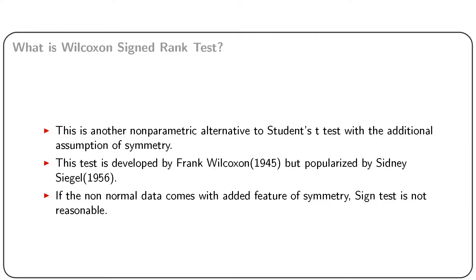This test was developed by Frank Wilcoxon in late 1945 but popularized by Sidney CJ. As is evident from the name, it uses sign and rank of the data together. In fact, it assumes symmetry apart from continuity of the underlying population to provide a distribution-free procedure. We have already seen that data can be non-normal in practice. If non-normal data comes with the added feature of symmetry, sign test is no longer sensible. In such a case, Wilcoxon signed rank test is a valid alternative.